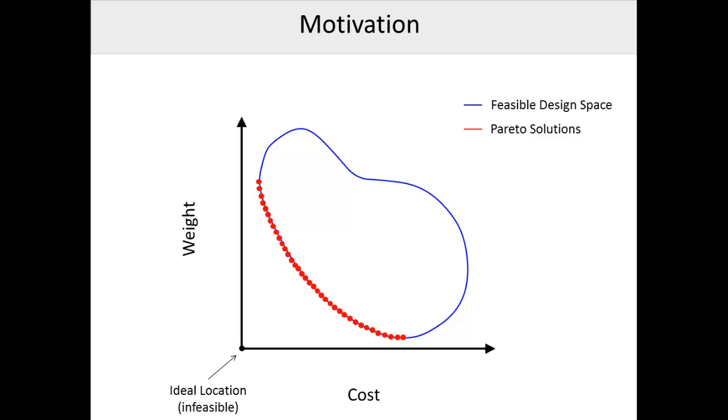A Pareto set of solutions is ideally small enough for the designer to handle cognitively, but still large enough to represent the unique features of the design space. One type of set that meets these criteria is called a Smart Pareto set. Smart Pareto sets contain more solutions in regions of high trade-off, where multiple objectives are changing rapidly, and fewer solutions in relatively flat regions, where perhaps only one objective is changing significantly.